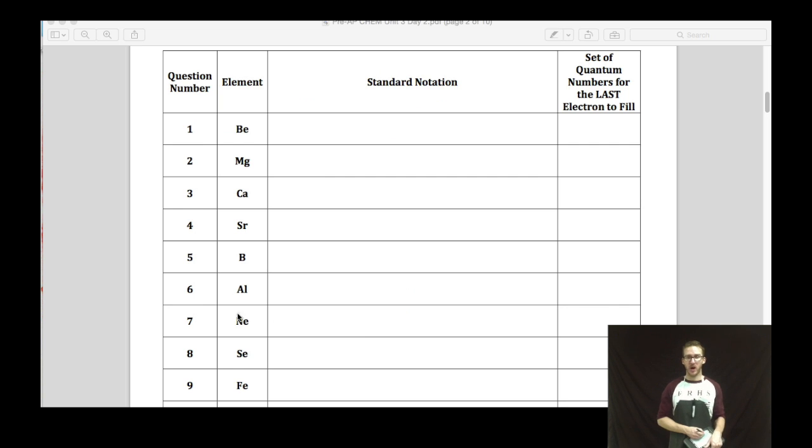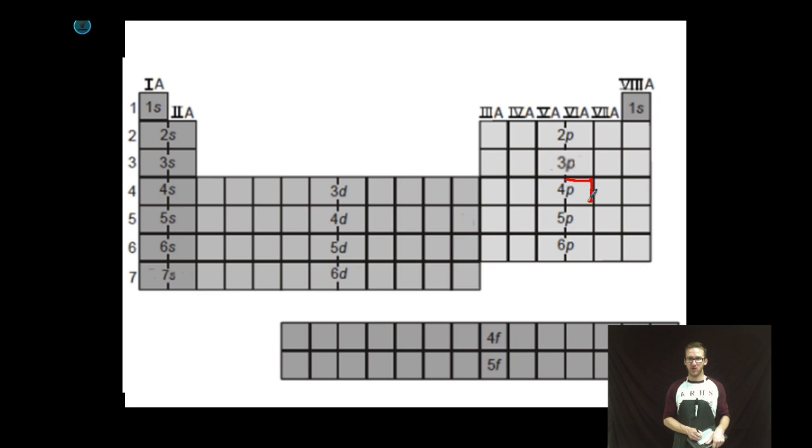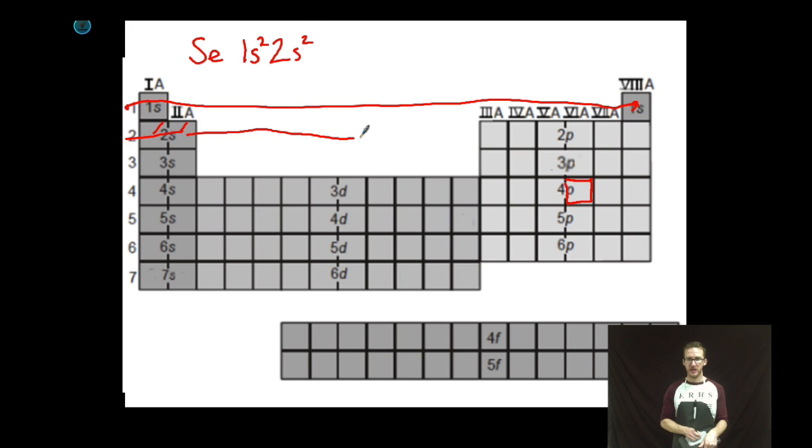I want to do a trickier one. Let's do selenium. Selenium you'll find right here on the periodic table. It's a doozy. Selenium. Always starting here, moving through the rows. We've got 1s2, 2s2, 2 boxes. Keeping it going.